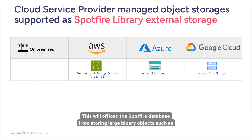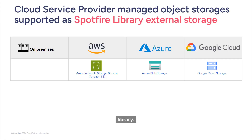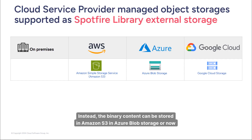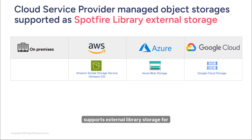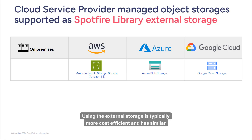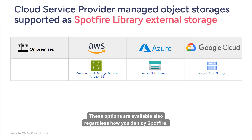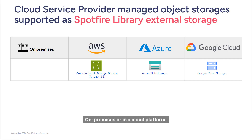Using external storage offloads the Spotfire database from storing large binary objects — only metadata is stored in the library. The binary content can be stored in Amazon S3, Azure Blob Storage, or now new in Spotfire 14.2, Google Cloud Storage — meaning Spotfire now supports external library storage for all three of the biggest cloud providers. Using external storage is typically more cost-efficient with similar performance, and these options are available regardless of whether you deploy Spotfire on premise or in a cloud platform.